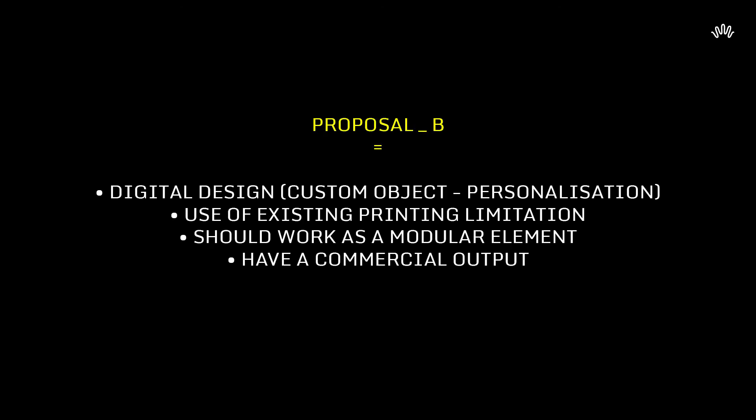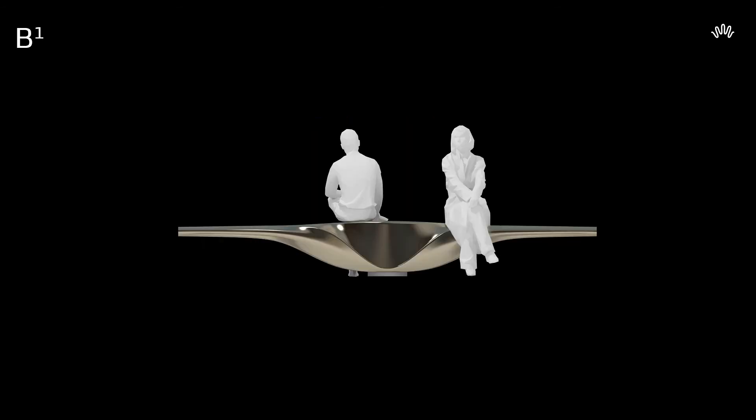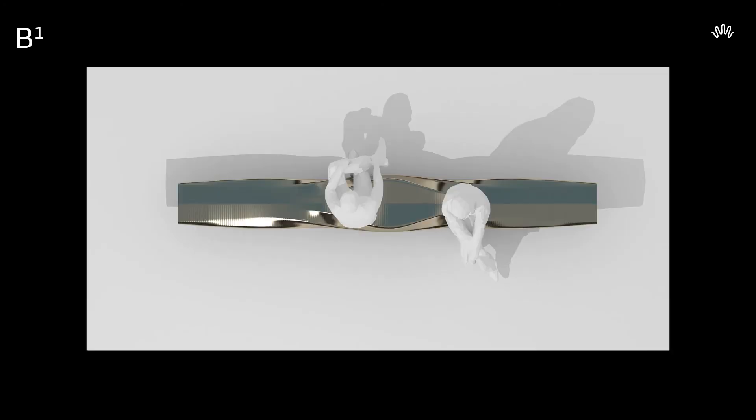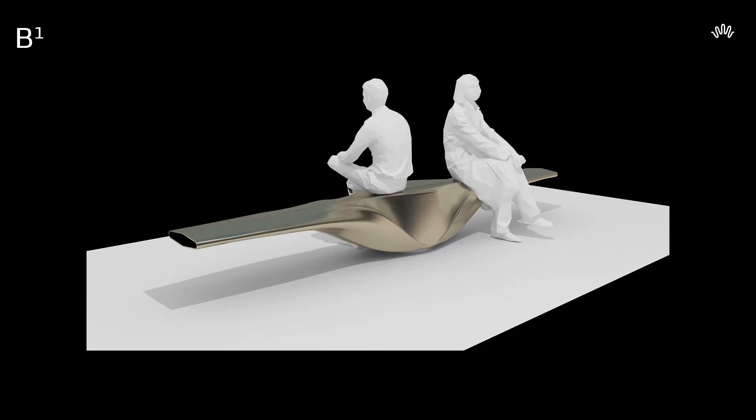Proposal B: we try to stay within the existing printing limitations. The design should be a modular element and we try to have a commercial output from this. Here you can see the object, which is a bench, and different views from it.